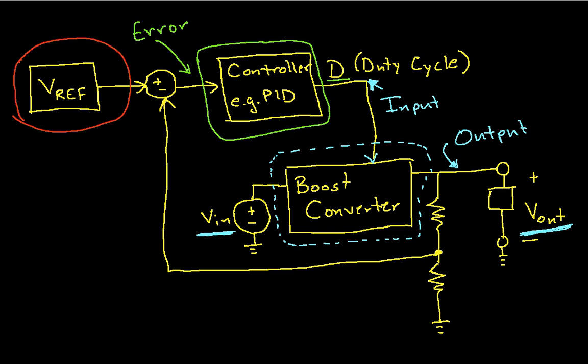And the idea is that the controller will adjust for variations in the input voltage, it will adjust for variations in the load that's connected to the converter, and make sure that the output voltage stays as constant as you can keep it.